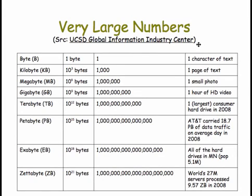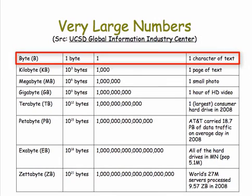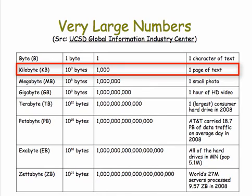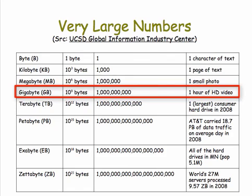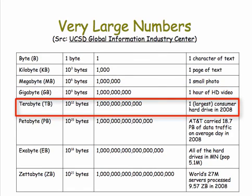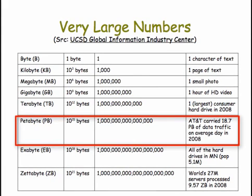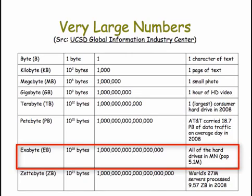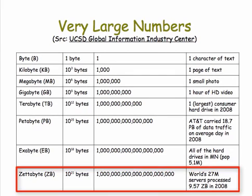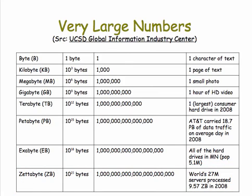To give a sense of the enormity of the data, let's look at this table compiled in 2011 by a group at the University of California at San Diego. A byte is roughly a character of data. A kilobyte is roughly a page. A megabyte is a very small photo these days. A gigabyte is roughly an hour of high-definition video. A terabyte, back in 2008, was the largest consumer hard drive you could buy. A petabyte, or 10 to the 15 bytes — in 2008, AT&T carried 18.7 petabytes on an average day of data traffic. An exabyte, 10 to the 18th bytes, is the amount of data on all the hard drives in Minnesota, which in 2008 had a population of 5.1 million. A zettabyte, 10 to the 21 bytes, is the amount of data processed by the world's 27 million servers in 2008.